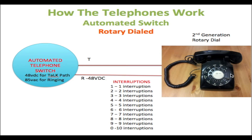On the rotary dial telephone, in order to dial you put your index finger into any one of the slots and bring it around to the metal barrier. Once you get to the metal barrier you can't go any further, so you release the dial and it rotates all the way back to the original position. For example, if you dial the number one, you place your finger into the one slot and bring it down to the metal barrier and release.